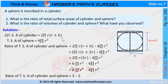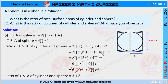The total surface area of the cylinder is 2πr(r + h), and the TSA of the sphere is 4πr². The ratio of TSA of cylinder to sphere is written as 2πr(r + h) : 4πr². We substitute h = 2r, and write 2πr(r + 2r) : 4πr².